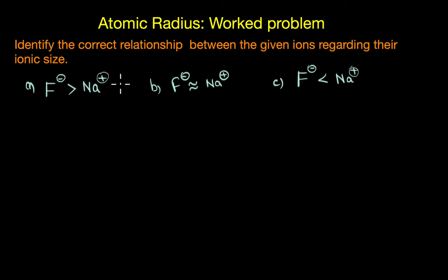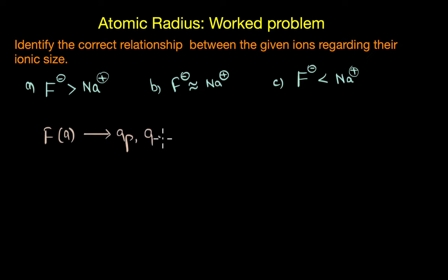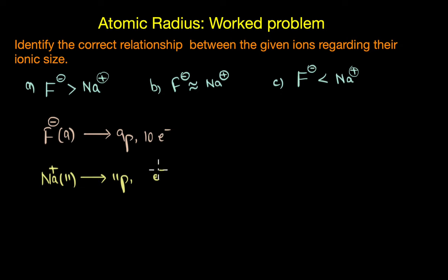The second question asks us to identify the correct relationship between F- and Na+ based on ionic size — one is an anion and one is a cation. Fluorine has atomic number 9, with nine protons and nine electrons, but F- has gained one electron, giving it ten electrons. Sodium has atomic number 11, with eleven protons and eleven electrons, but Na+ has lost one electron, giving it ten electrons. So both ions are isoelectronic with ten electrons each.